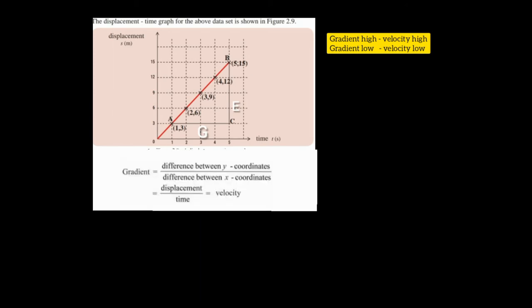Now we have a question: how to calculate the gradient? It's really simple. You have to take any two points on the y-coordinate and get the difference. From this graph, let's consider two y-coordinate points B and C, so you subtract B minus C. You can also consider any points such as B-E or B-F, but they should be on the y-coordinate. Now let's also consider two points on the x-coordinate and find their difference — for example, points A and C, so A minus C. We can calculate the gradient by dividing the difference in y-coordinates by the difference in x-coordinates.